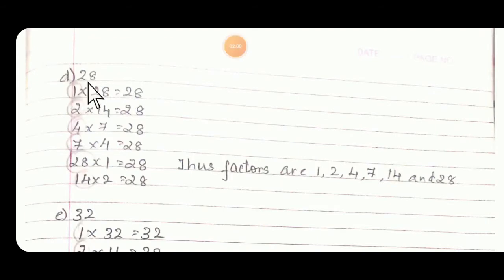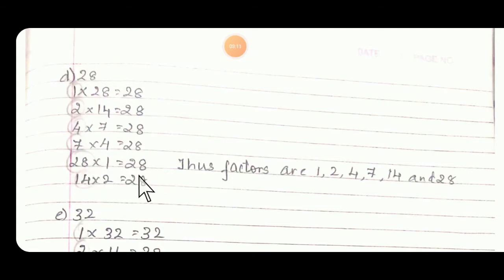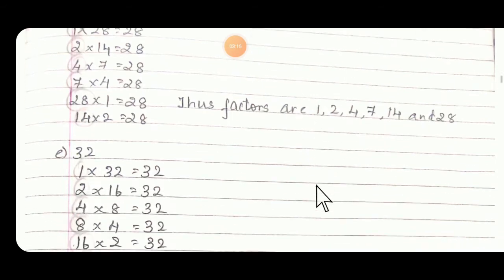1 into 28 equals 28, 2 14s are 28, 4 7s are 28, 7 4s are 28, 14 2s are 28, 28 1s are 28. Thus factors are 1, 2, 4, 7, 14, and 28. Then similarly find for 32 and F: 45.